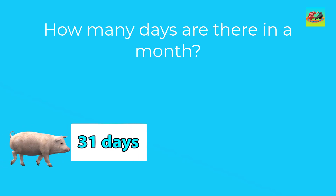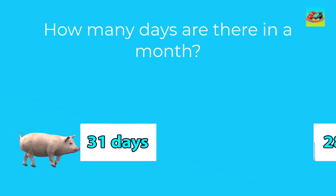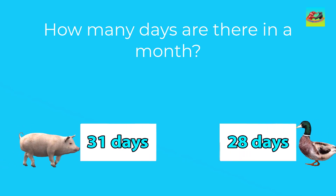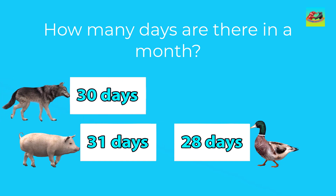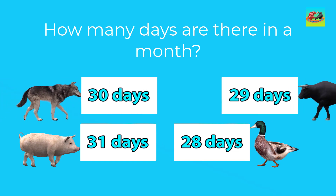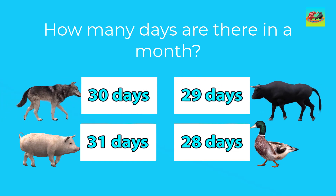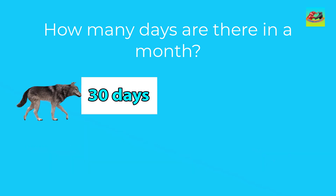How many days are there in a month? The correct answer is thirty days. There are thirty days in a month.